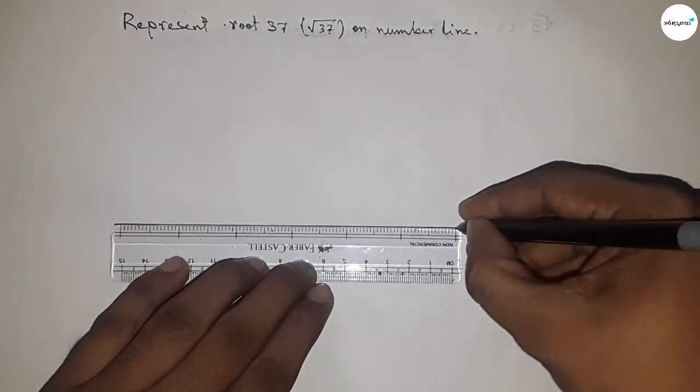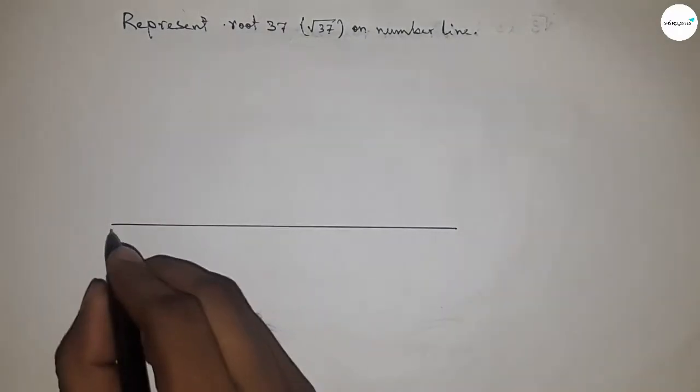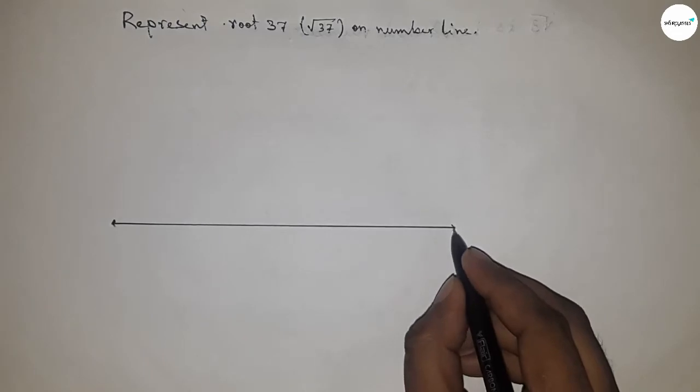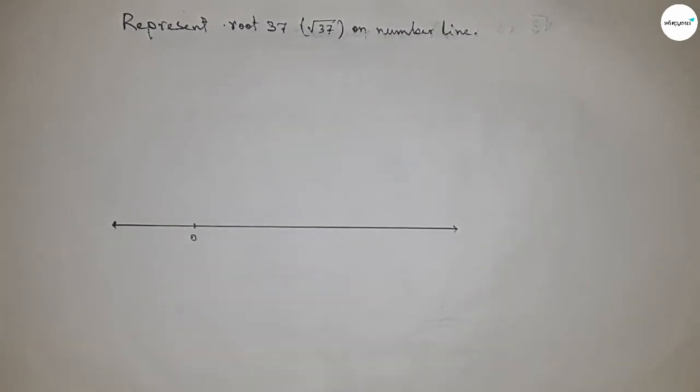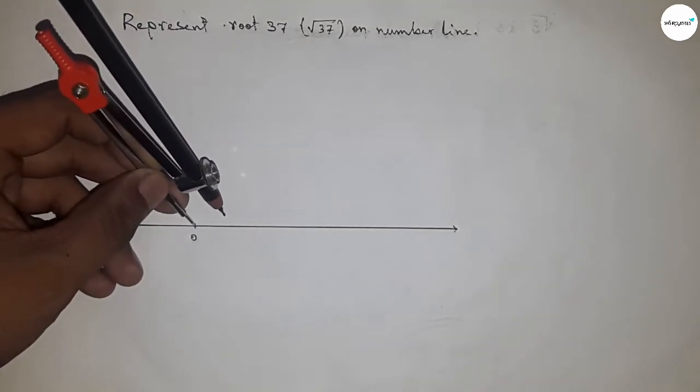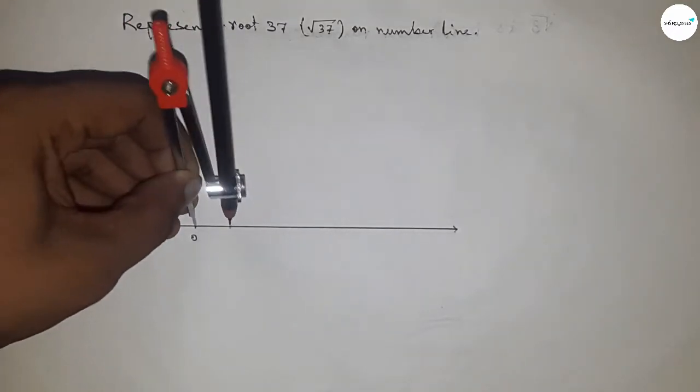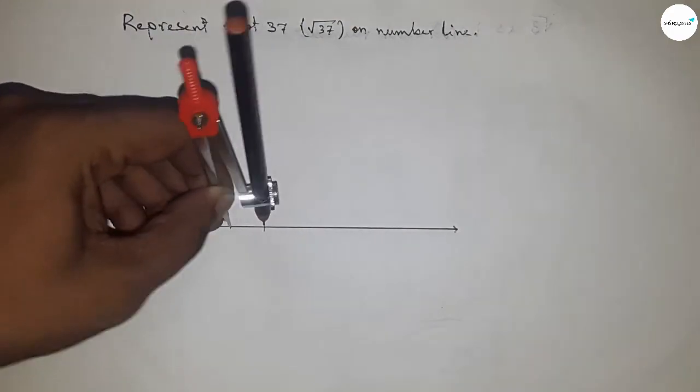First, draw a line of any length and mark the ends with arrows. Now mark the starting number, zero. To mark the numbers on the line, we'll use a compass by taking any length.